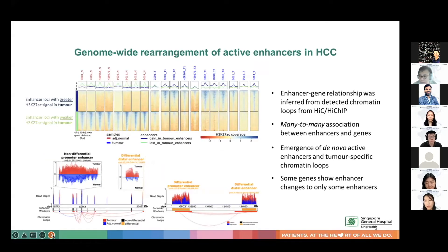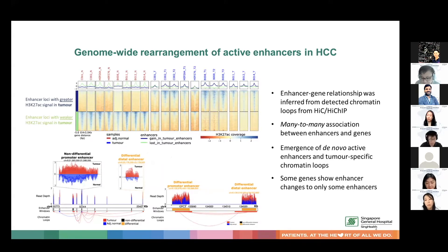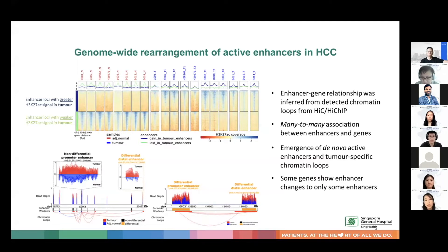The very first step was to identify the genomic loci that presented epigenetic changes in terms of the shift and rearrangement of the active enhancer marks, mainly by K27 acetyl histone marks, and we referred to them as differential enhancer loci. To infer the functional implications of any changes that happen in enhancers, we associated the enhancers to gene promoters based on the detected chromatin loops between them, so that we can interpret what will be the downstream effect of any changes we saw in the enhancers.